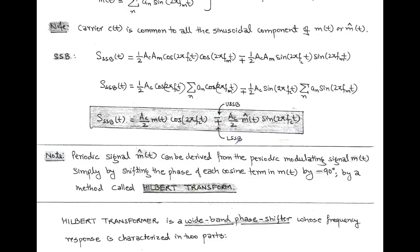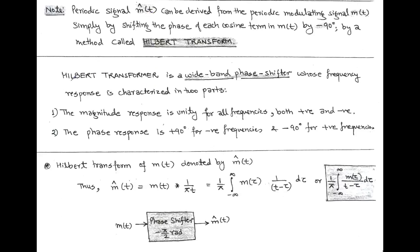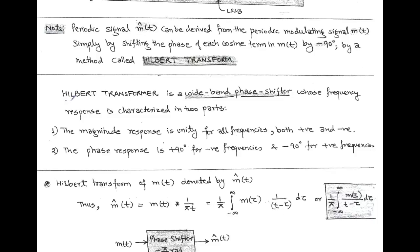We note that m̂(t), a periodic signal, can be derived from the modulating signal m(t) by a method called the Hilbert transform. In the Hilbert transform, the cosine term of m(t) is shifted by minus 90 degrees and we get m̂(t), which contains a sine term. Therefore, for the generation of single sideband we use the Hilbert transform. With the Hilbert transform, we obtain m̂(t) from m(t) by simply shifting the cosine term of m(t) by minus 90 degrees.